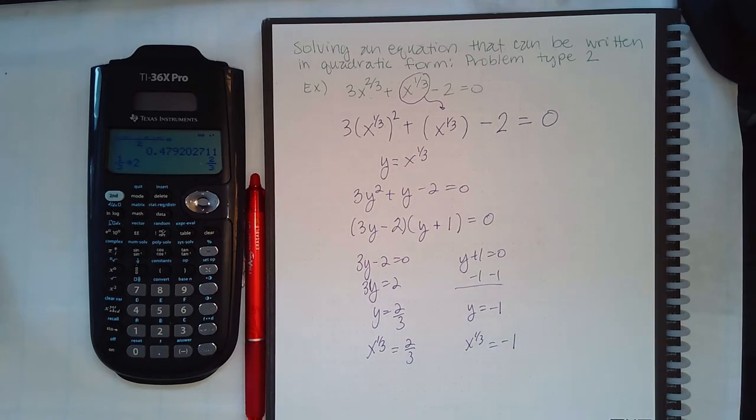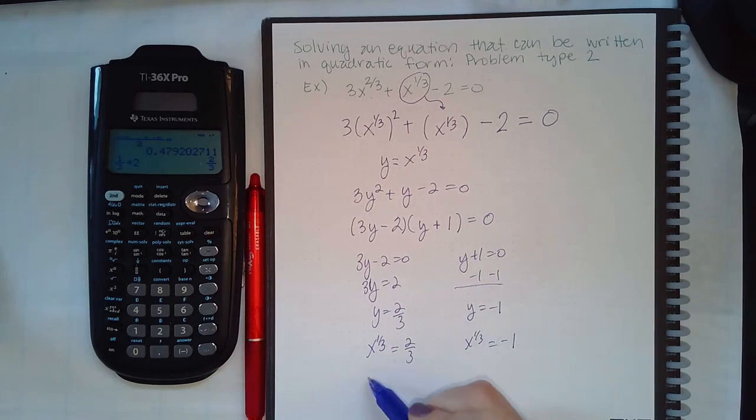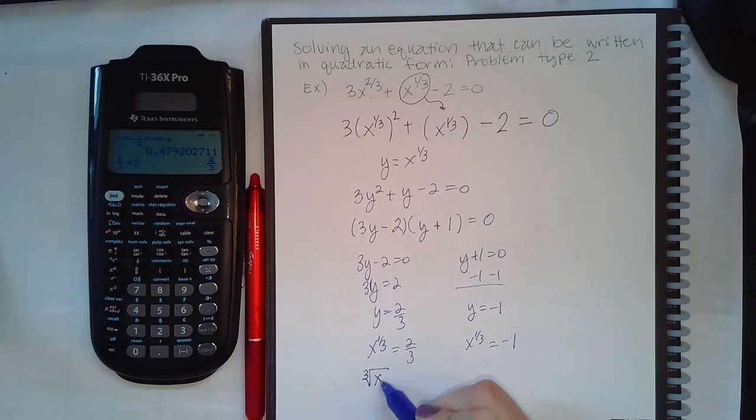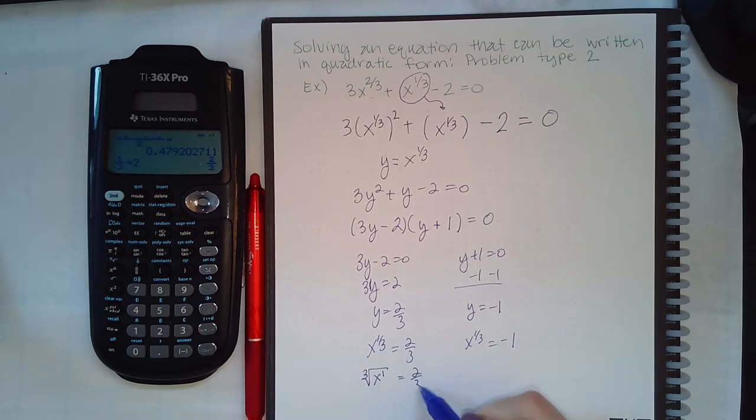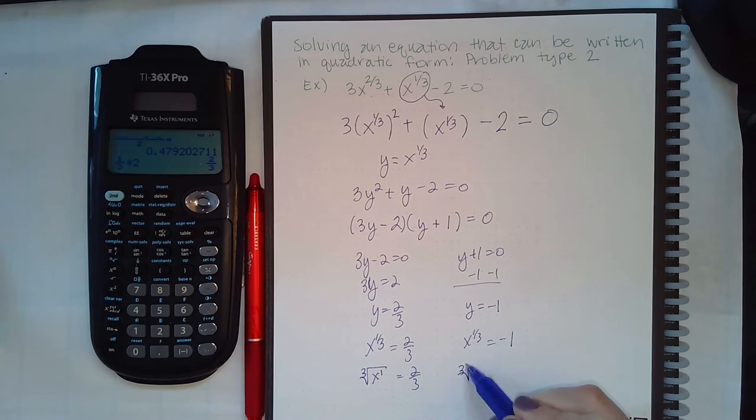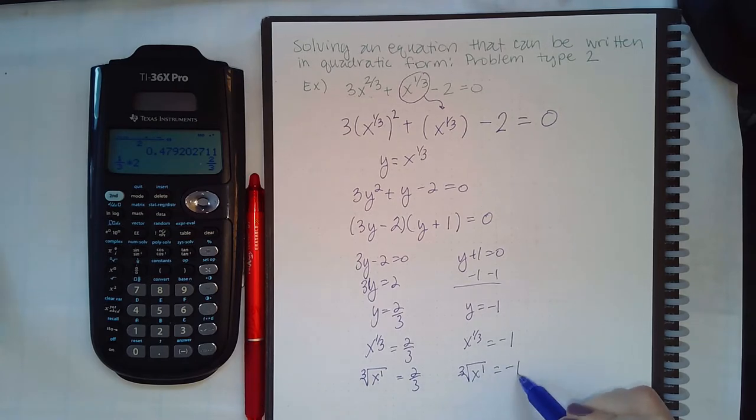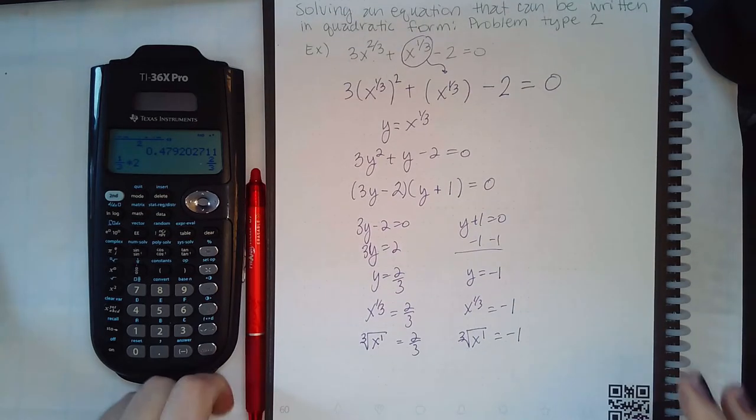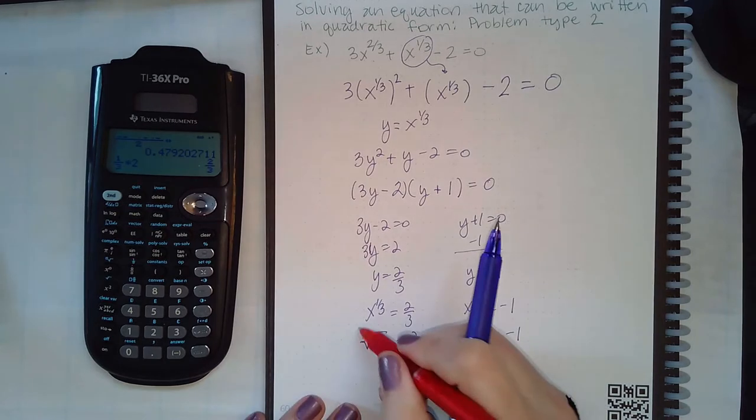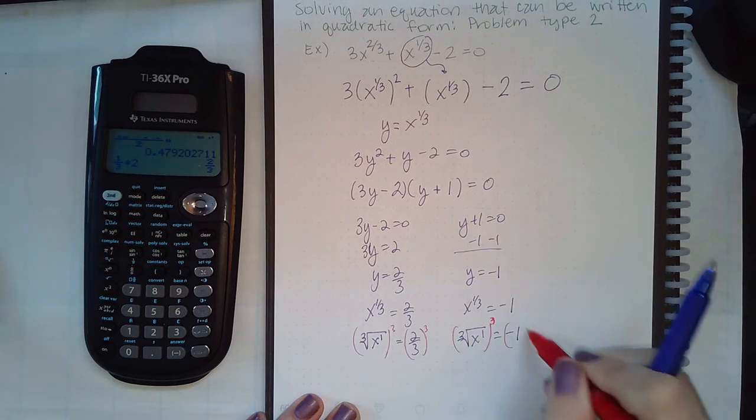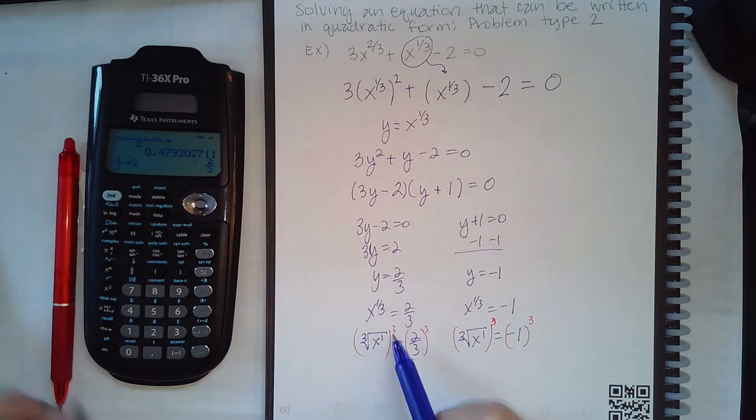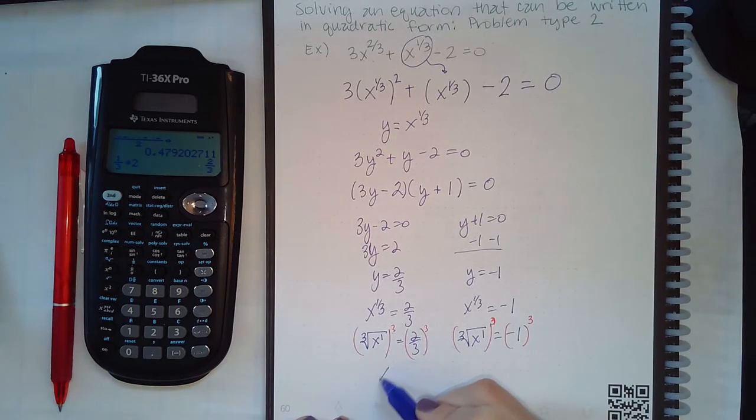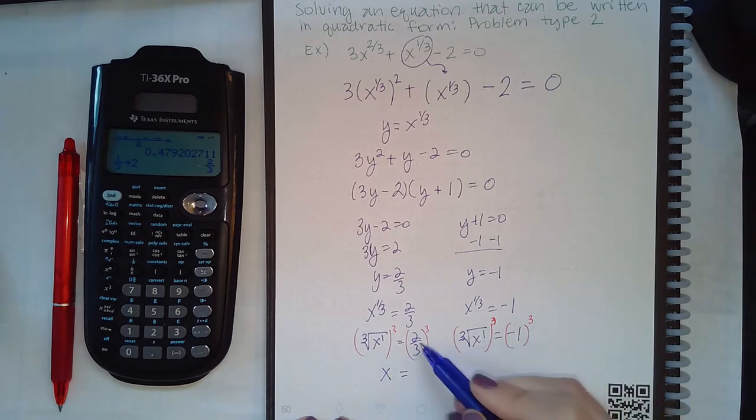And then we have to put back what y represents. And then if you're trying to solve this, remember what a fraction exponent means. It means the cube root of x to the one. And the same thing for this, the cube root of x to the one. So how do you get rid of a cube root? You cube both sides.